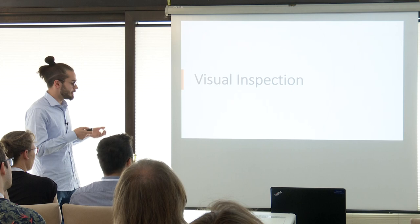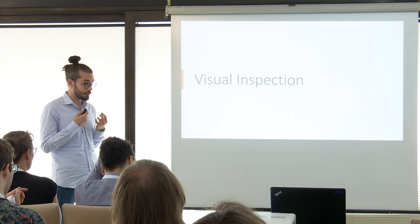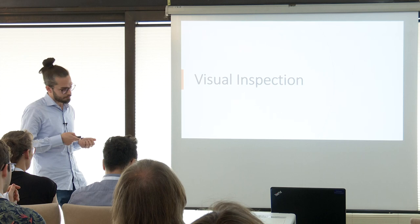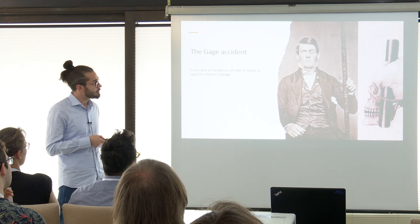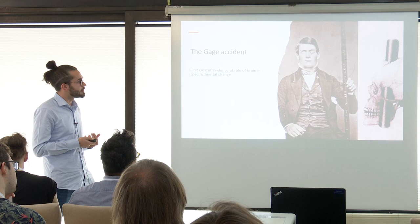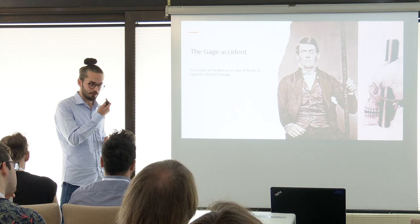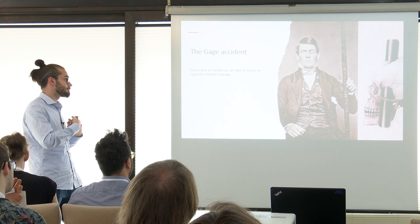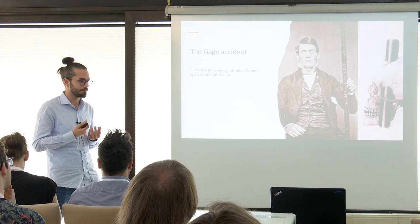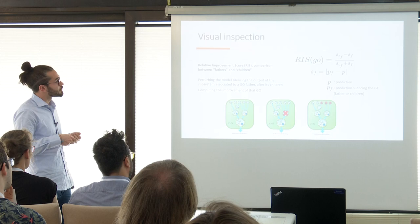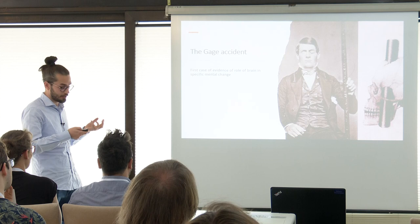We devised an interpretability method inspired by the Phineas Gage accident. During a work day, an iron pipe went through Phineas Gage's frontal left lobe. He survived, but his behavior changed forever — he was a calm person who became very nervous and blasphemous. This is the first case of evidence of the role of specific brain regions in mental and behavioral change.